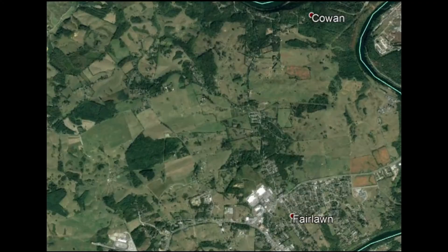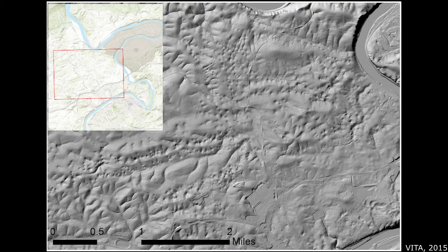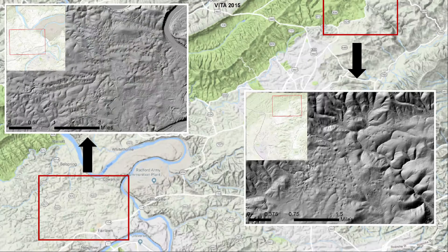Detailed topographic maps of these areas show the surface expression of a karst landscape, including fracture traces and numerous sinkholes that give the landscape an almost lunar-like appearance.